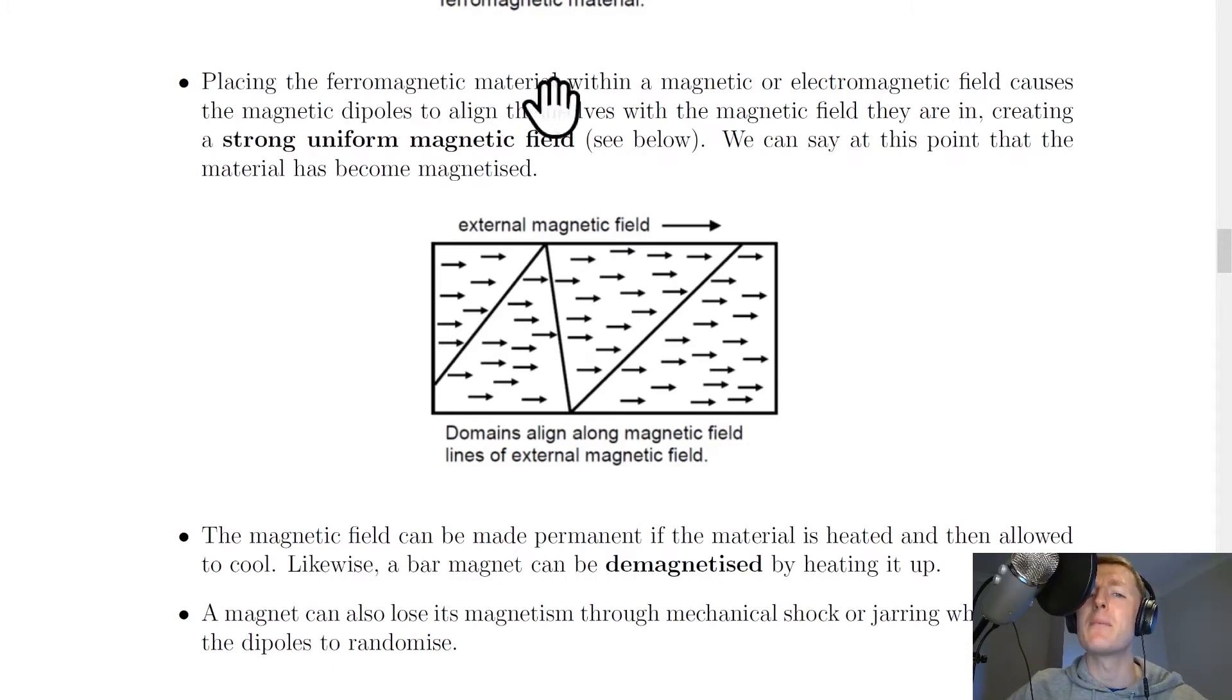However, placing the ferromagnetic material within a magnetic or electromagnetic field causes the magnetic dipoles to align themselves with the magnetic field they are in, creating a strong uniform magnetic field. We can say at this point that the material has become magnetised.